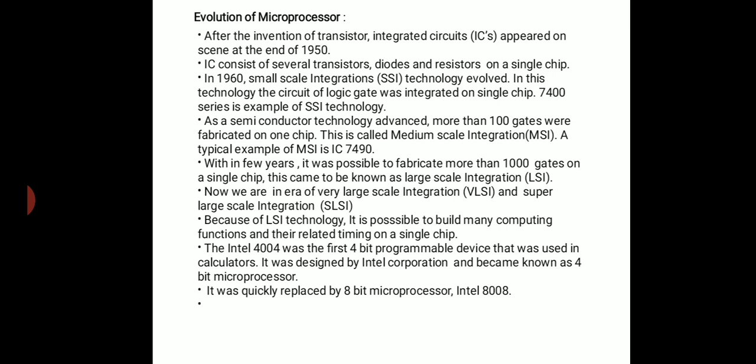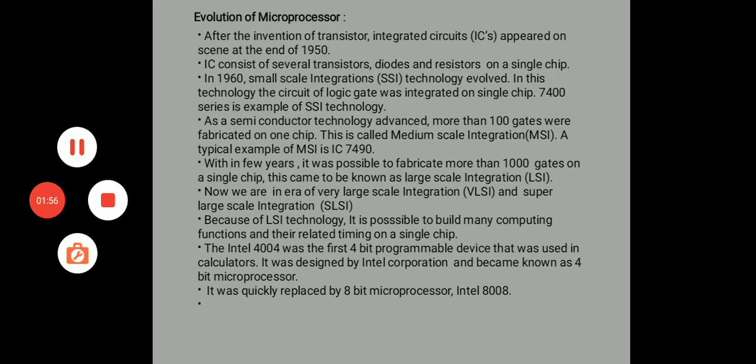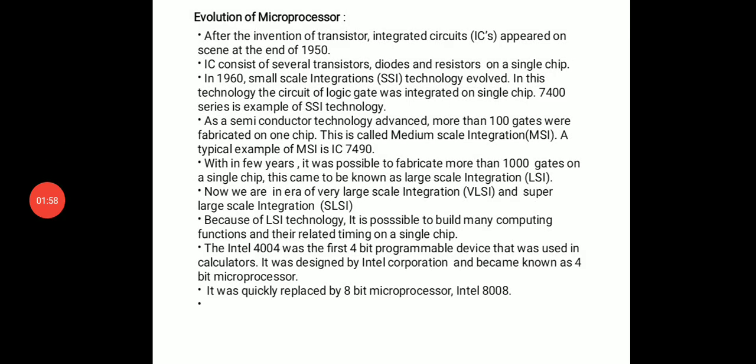The evolution of microprocessor is important. We look at the important image of transistor and integrated circuit. The transistor was added around 1950, and out of the transistor came the electronic device called the integrated circuit (IC), which is a way to put multiple devices in one place.